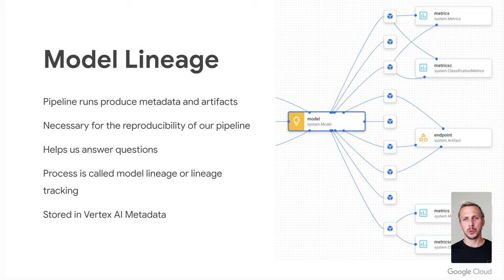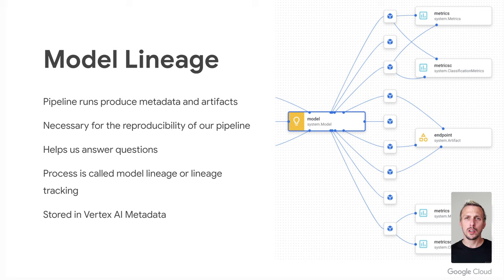Each pipeline run produces metadata and ML artifacts like hyperparameters, data, the code itself, or the accuracy of our model — and they are necessary for the reproducibility of our pipeline. We need them to understand changes in model performance. So we can't compare pipeline runs if we don't know what data was used to train the model on. This process is called model lineage, and it helps us answer questions like: what data was used to train the model, which pipeline run produced the most accurate model, and what hyperparameters were used.